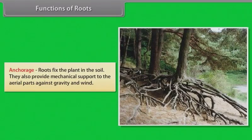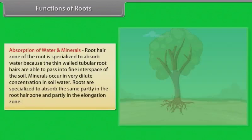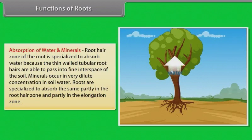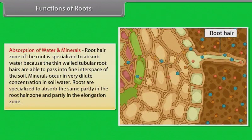Functions of roots. Anchorage: Roots fix the plant in the soil and also provide mechanical support to the aerial parts against gravity and wind. Absorption of water and minerals: The root hair zone of the root is specialized to absorb water because the thin-walled tubular root hairs are able to pass into fine interspaces of the soil.